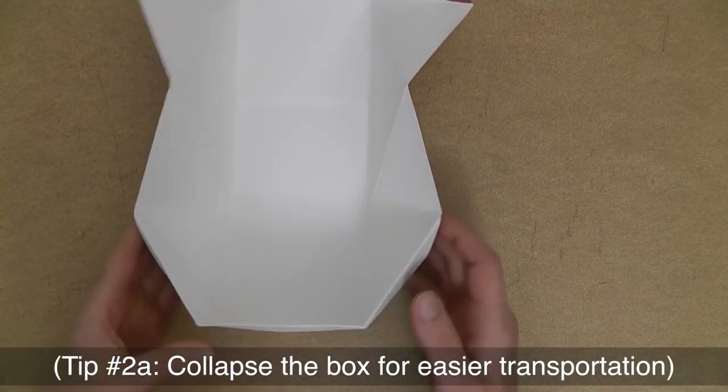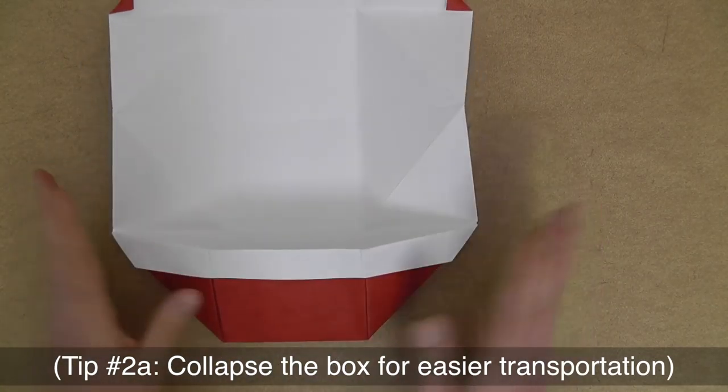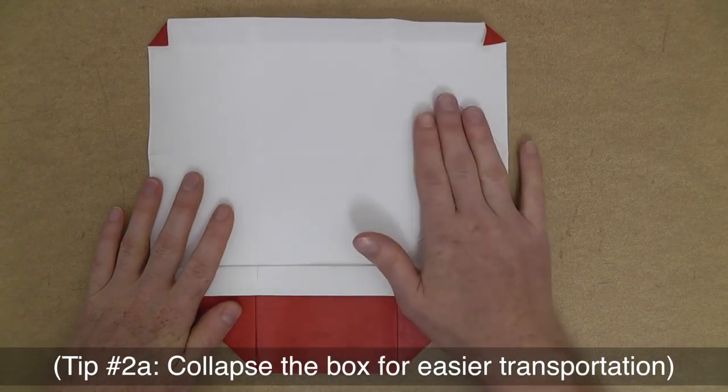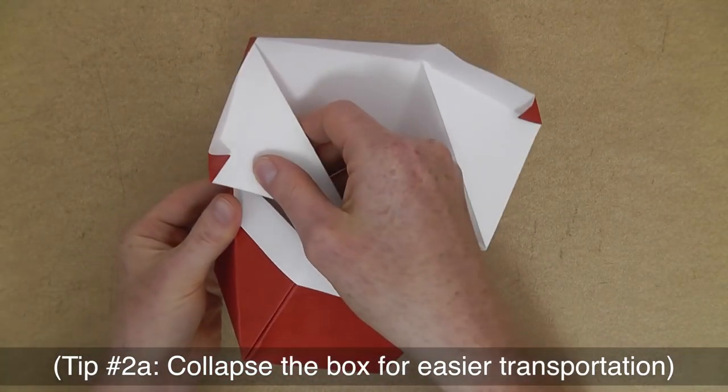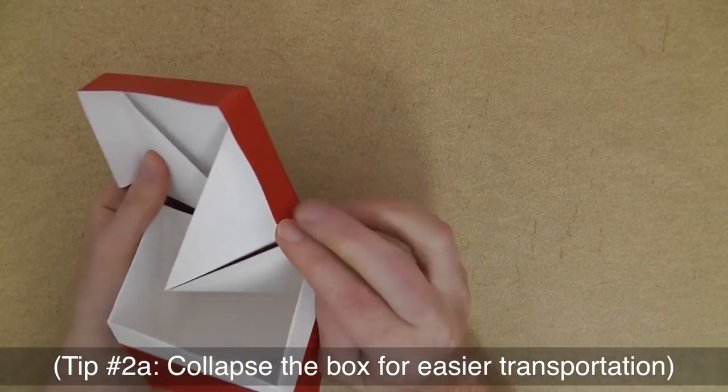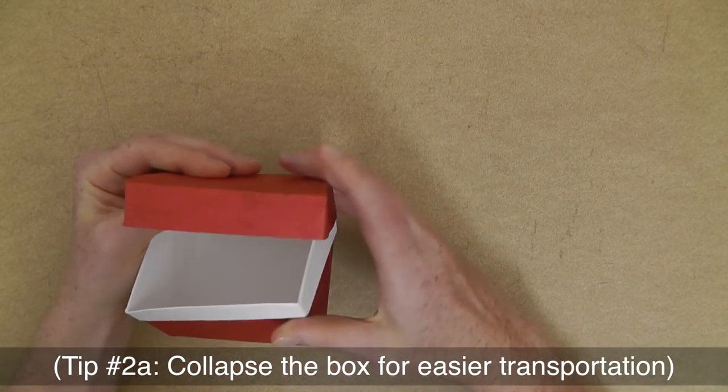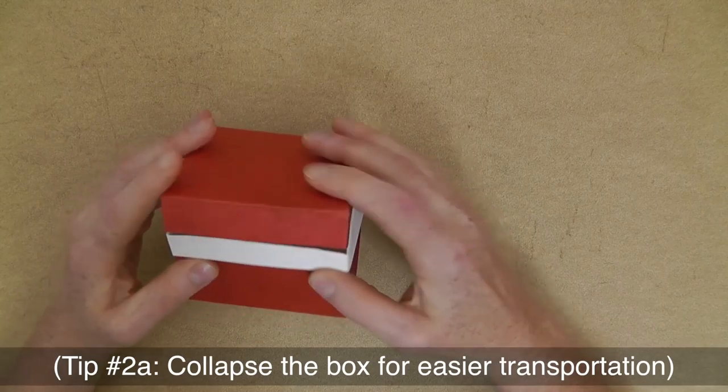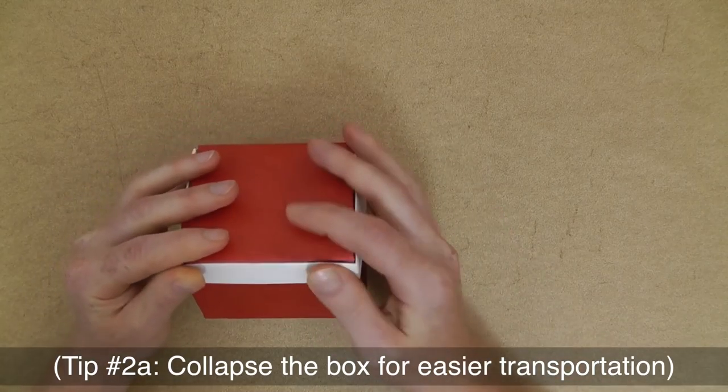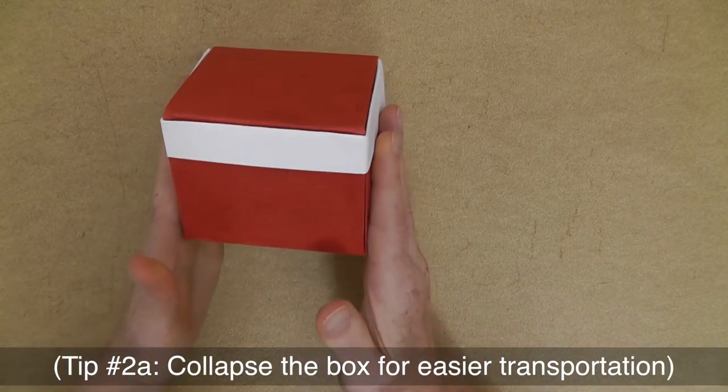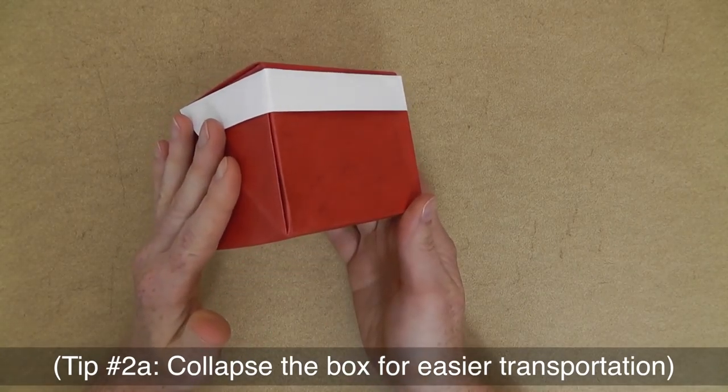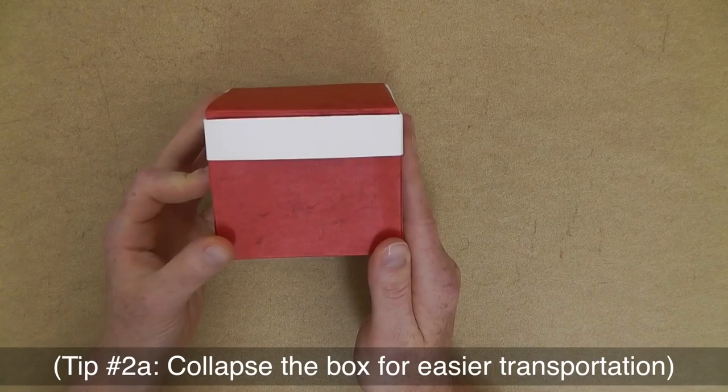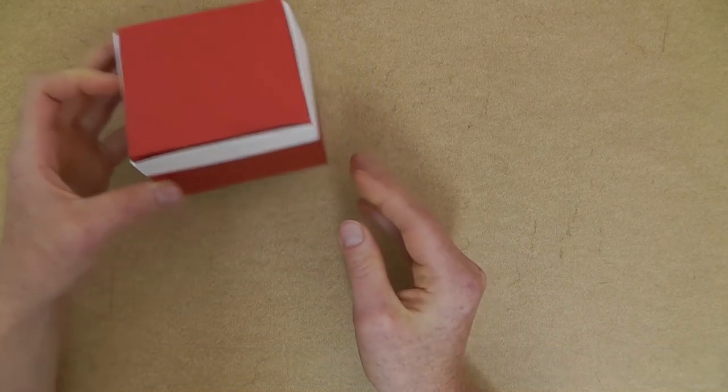Also, as you can see, it's really easy to collapse the box, perhaps for transportation. Like this, it's flat. And then you can simply fold it back together just with a couple of moves. And your box is all done again. And that is the second tip about using cardstock and also making it easy to transport. I kind of snuck in a second one in there.